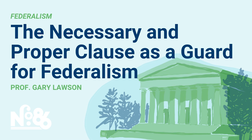Almost as soon as the Constitution was ratified, a dispute arose about federal versus state power. Could the new national government charter a national bank? Anyone familiar with Alexander Hamilton — either from a study of American history or from attending Broadway shows — knows that one of the big issues in George Washington's administration was whether to go for a Bank of the United States. There were arguments of policy about whether that was a good idea, and also constitutional arguments about whether Congress had the power to create a Bank of the United States.